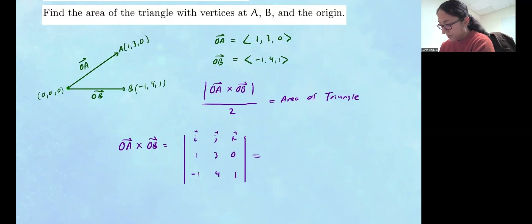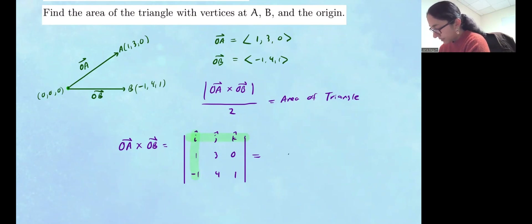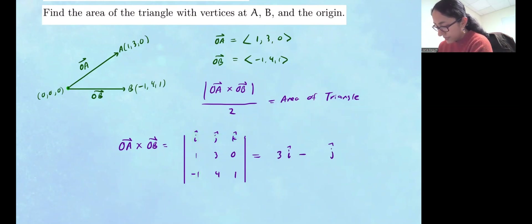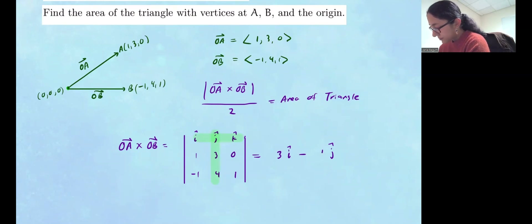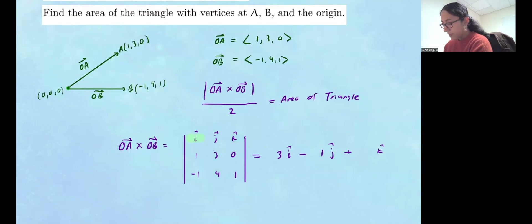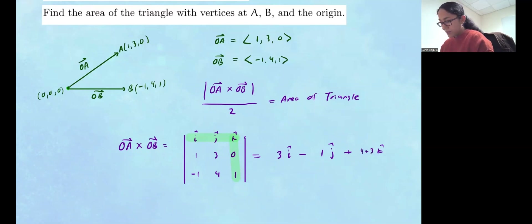For the i component, we hide the first row and column and take the 2 by 2 determinant: 3 times 1 minus 4 times 0, which is just 3. For the j component, we hide its row and column, giving us 1 times 1 minus 0, which is 1 — and since j is subtracted, this becomes minus 1. For the k component, we hide those rows and columns and get 4 times 1 minus 3 times negative 1, that's 4 plus 3, which gives us 7.